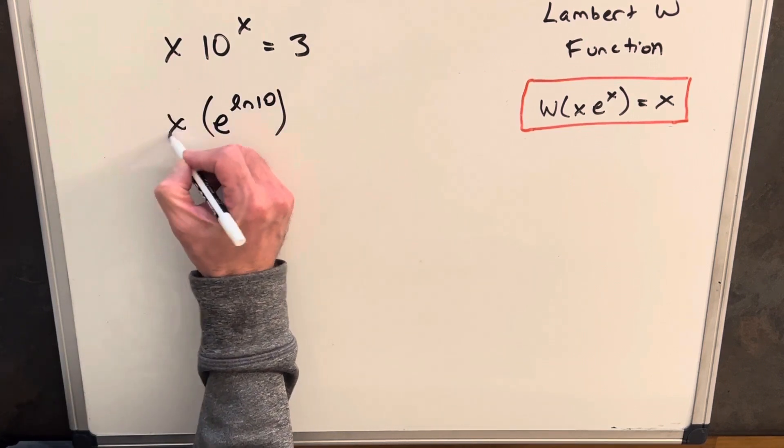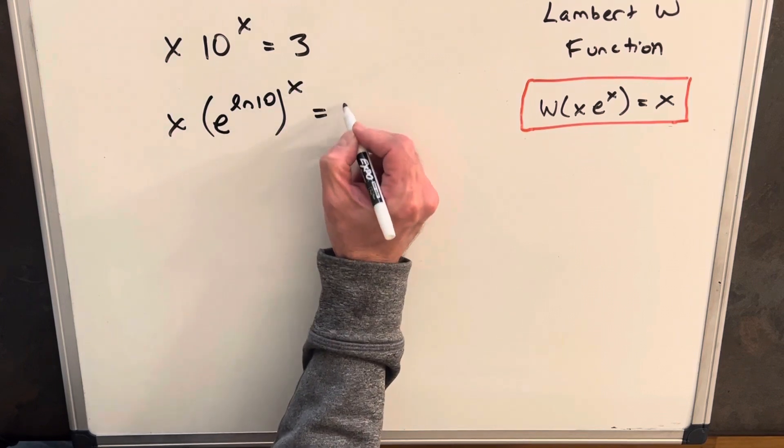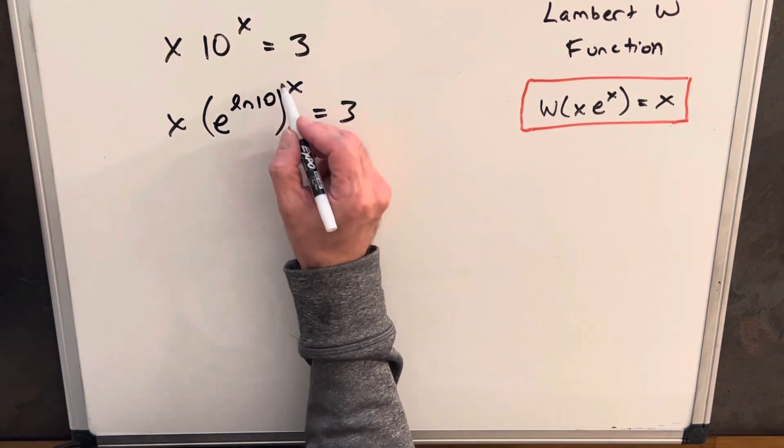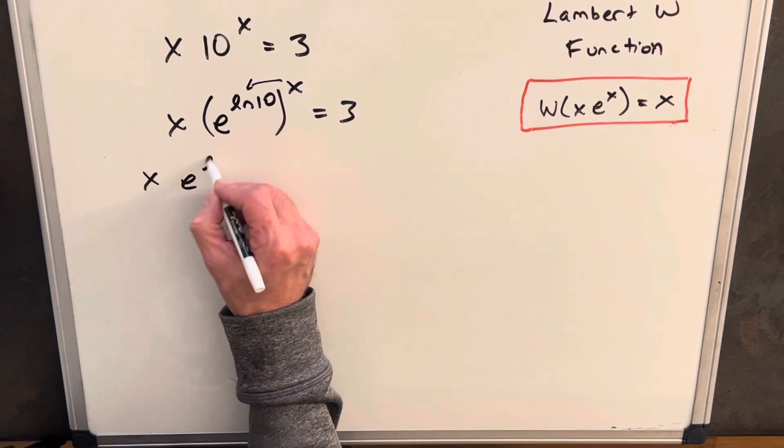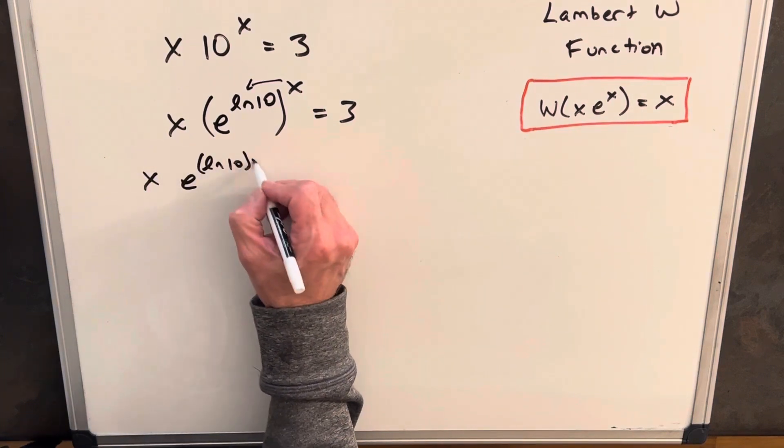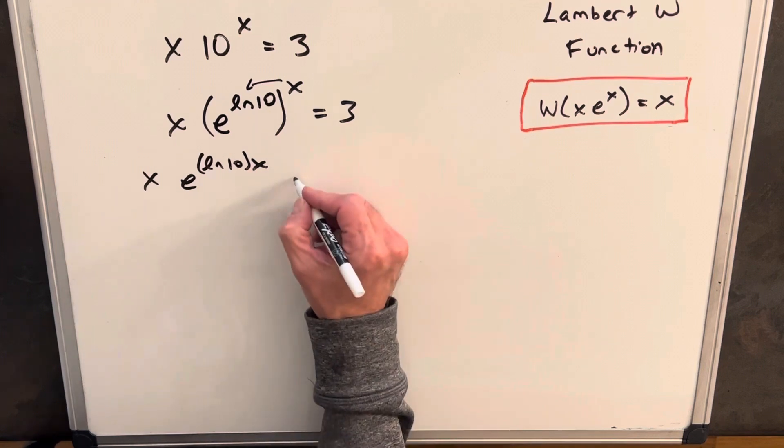So let's just rewrite our whole thing. We'll have an x in front and an x exponent equals 3. Then let's just multiply our 10 in here. So we're going to have x, e, ln 10. Just make it clear that we're multiplying there. x equals 3.